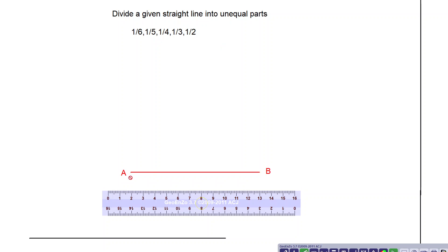To do that, the given line is AB. Now you draw perpendiculars at A and B in equal length.